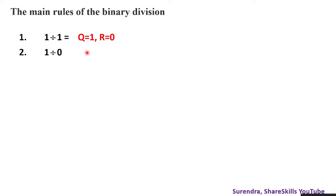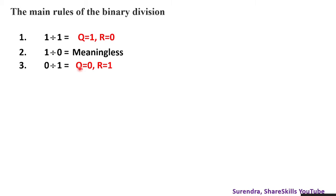So it's meaningless — we cannot divide any number by 0. Even 0 divided by 1: the quotient is 0 but the remainder is 1. And 0 divided by 0 also cannot be done — that is also meaningless.